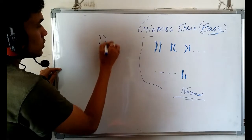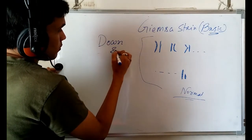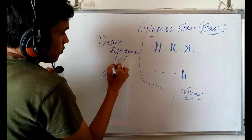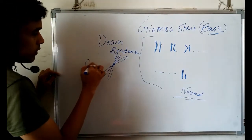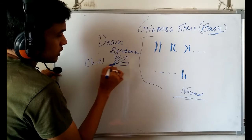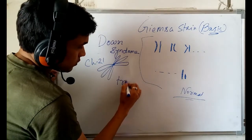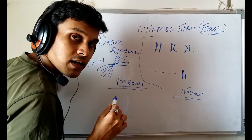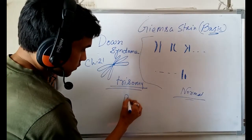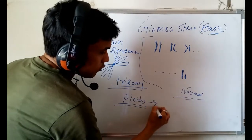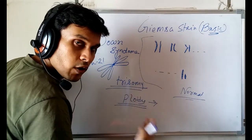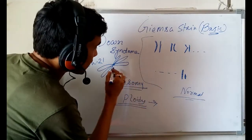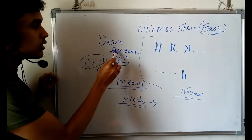For example, there is a pathogenic condition called Down syndrome, where instead of the diploid structure of chromosome 21, there is an extra chromosome present — this is called trisomy. So instead of diploid, there is polyploidy. Ploidy is the copy number of chromosomes: diploidy means two copies, haploidy means one copy, and triploidy or polyploidy means more than two copies. Trisomy is a condition of polyploidy, which we see in Down syndrome.